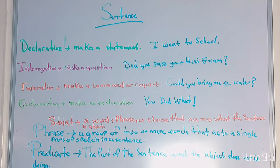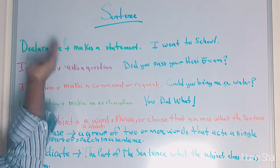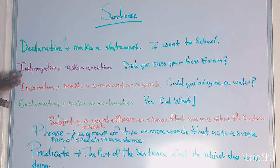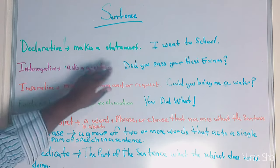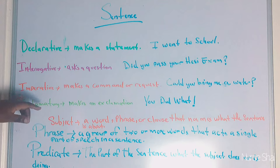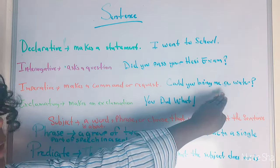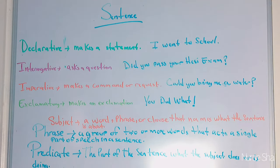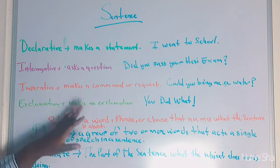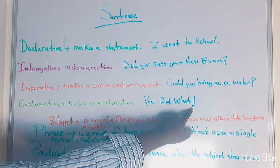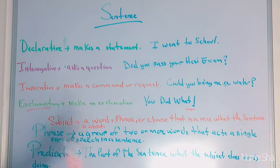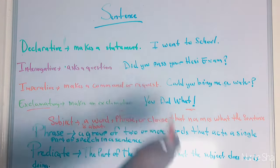A sentence is a group of words that express a complete thought. There are four types of sentences. A declarative makes a statement — example: 'I went to school.' An interrogative acts as a question — 'Did you pass your HESI exam?' An imperative makes a command or request — 'Could you bring me a water bottle?' And exclamatory makes an exclamation — 'You did what?!' The exclamation mark tells you it's an exclamatory sentence.